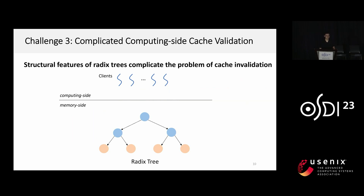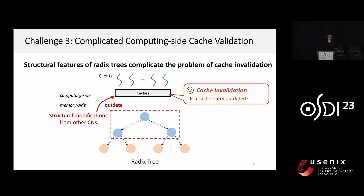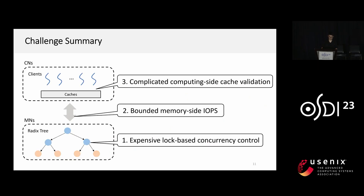The third challenge is the complicated computing-side cache invalidation. Chain indexes on DM usually adopt computing-side caches to reduce access latency. The remote structural modification from other compute nodes will invalidate local caches, leading to the cache invalidation problem. Common optimizations of the radix tree, such as path compression and adaptive nodes, will further complicate the cache invalidation design. In summary, the three challenges are: expensive lock-based concurrency control, bounded memory-side IOPS, and complicated computing-side cache invalidation.